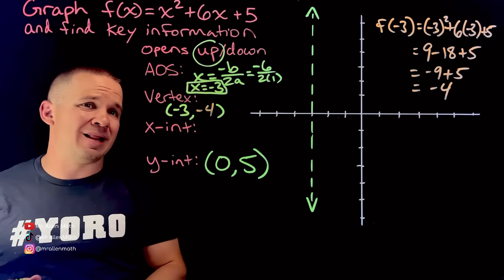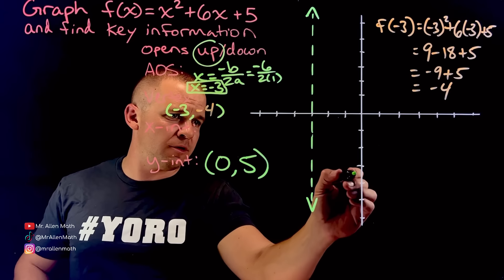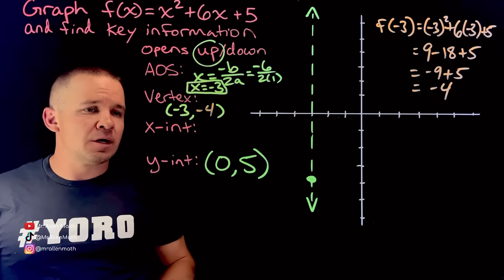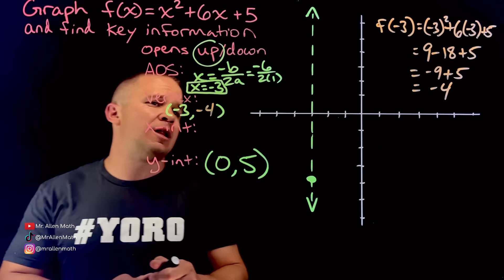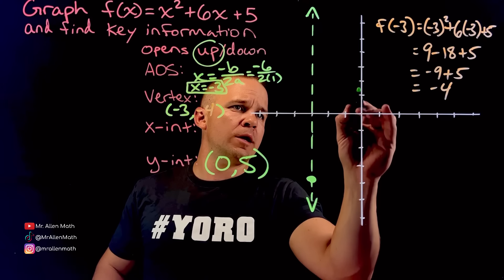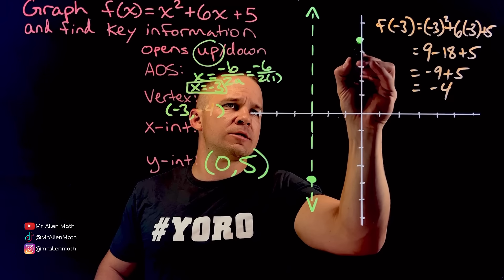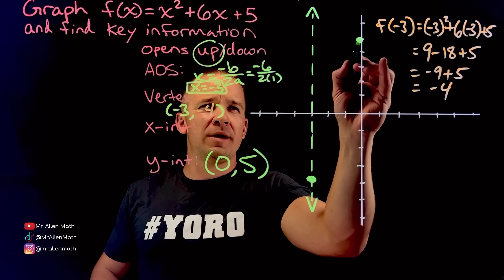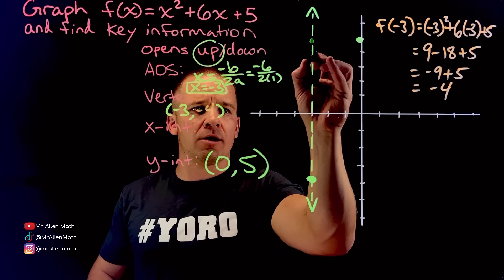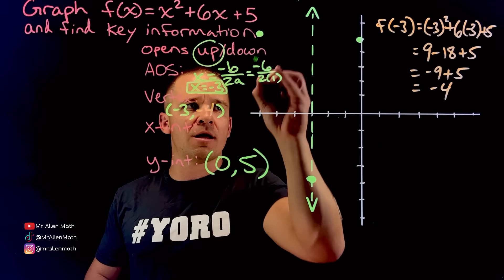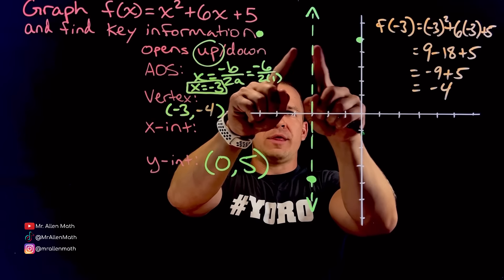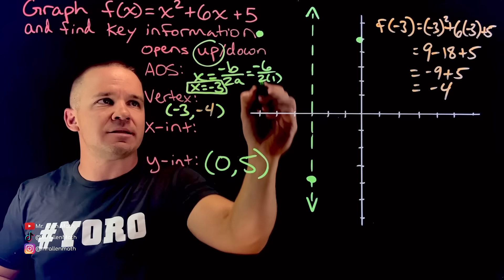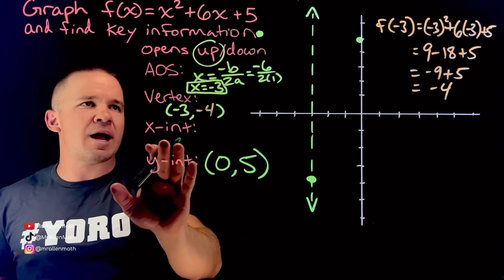Let's go ahead and plot that thing: negative three, negative four — there it is. Next, we've got our y-intercept. I can actually plot that zero comma five. And I am three away from my axis of symmetry. Would it be logical that I could go three this way and three over the other way? That would be symmetrical — that's the whole point of the axis of symmetry. Now I have enough to connect these dots, but I'm going to do a little bit more here.